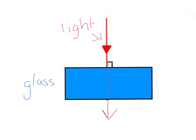We call this the normal line, because it is at a right angle to the front face of the glass that it is entering. This square here indicates a right angle.